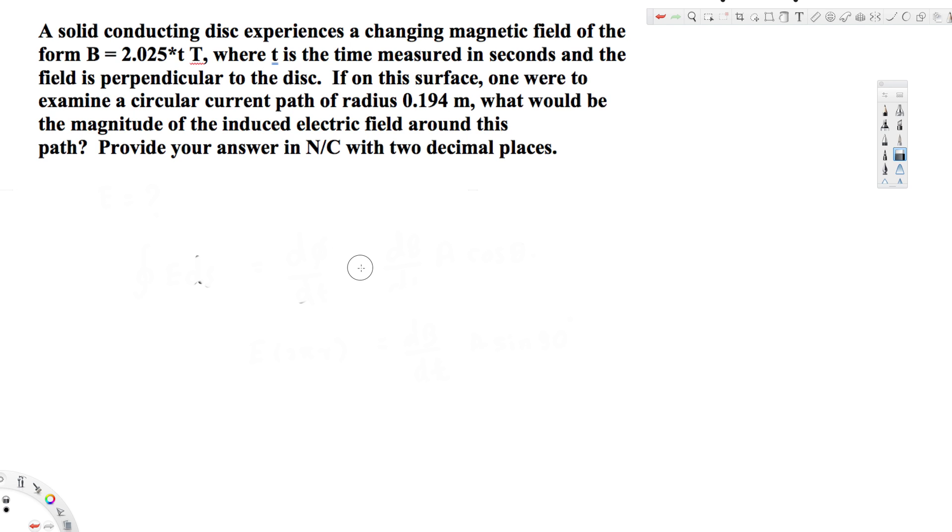Hey, what's going on guys, let's look at this problem. This question is asking about a solid conducting disk experiencing a changing magnetic field of the form B = 2.025t Tesla, where t is the time measured in seconds, and the field is perpendicular to the disk.